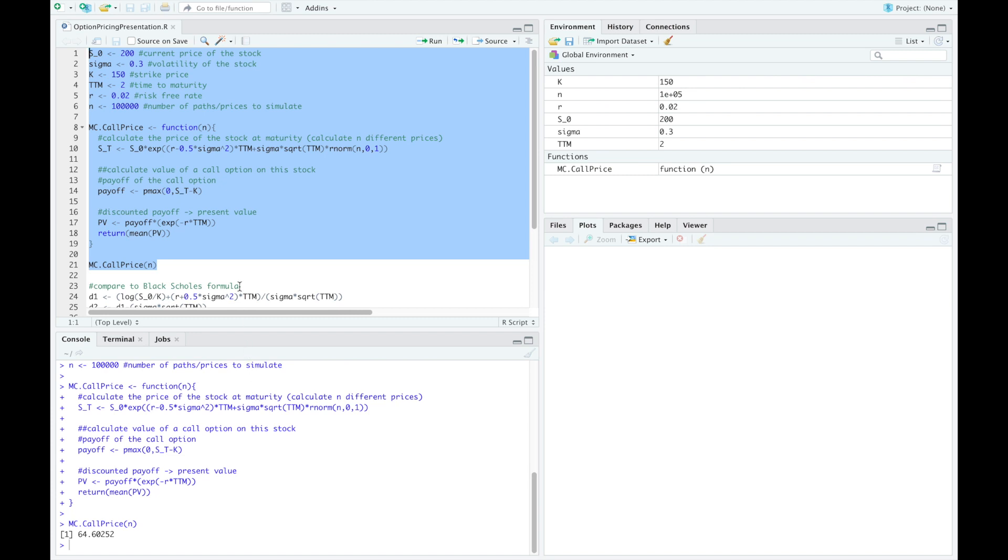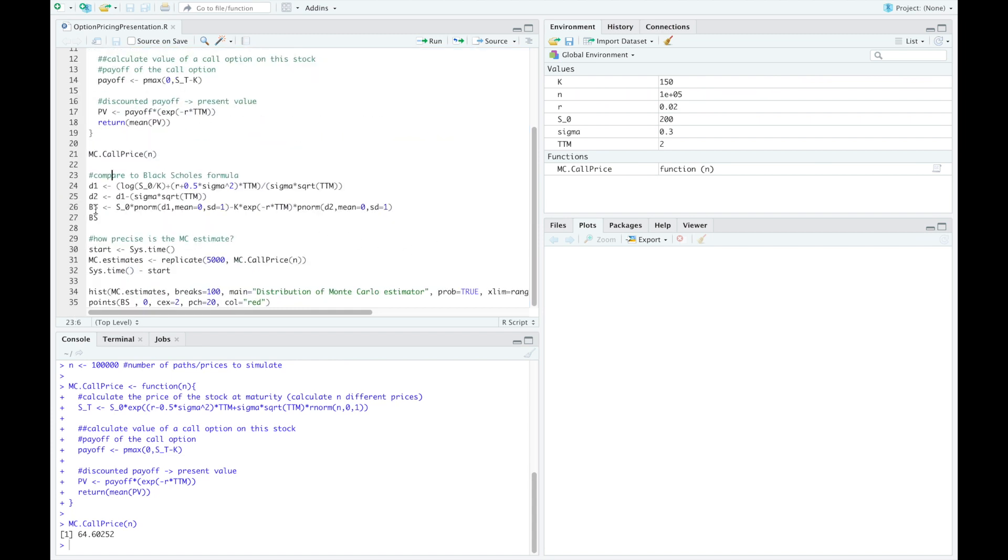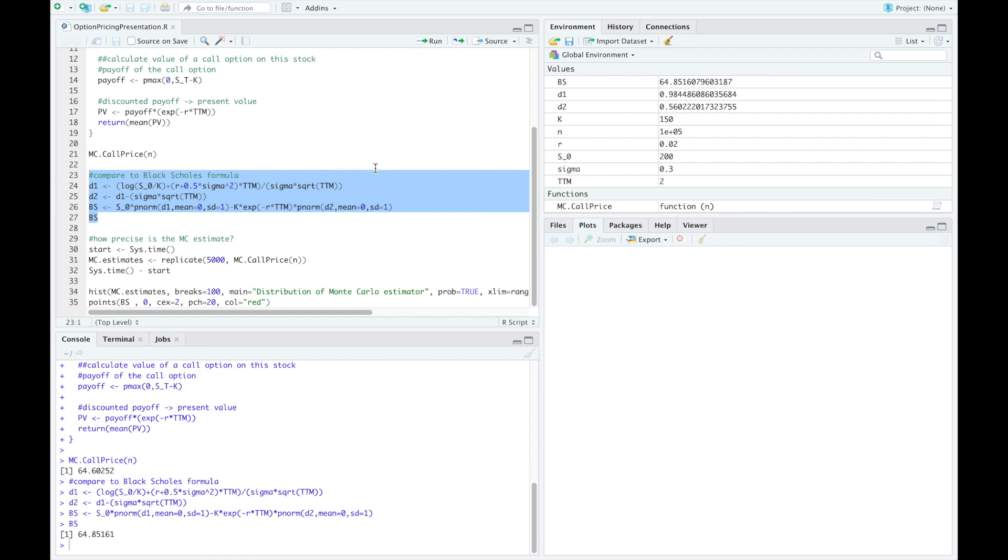To compare our Monte Carlo estimator and to see how accurate it is we compare it to the Black-Scholes formula. So we compare it to the price based on the formulas we provided before which is in this case 64.85. So we are quite close.